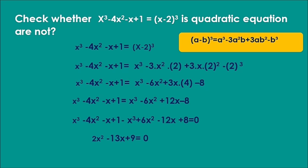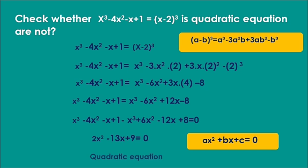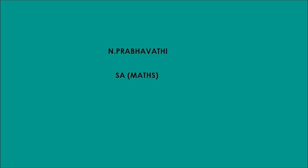This is in the form of ax² plus bx plus c equals 0. So, this is a quadratic equation. Thank you.